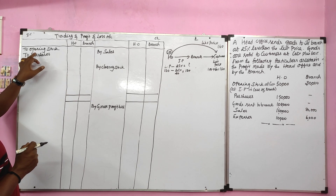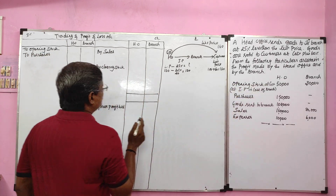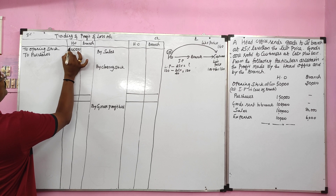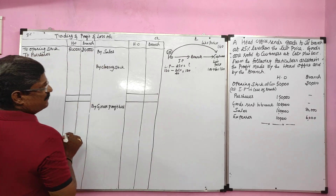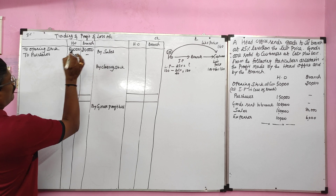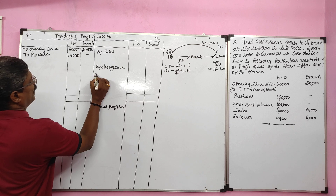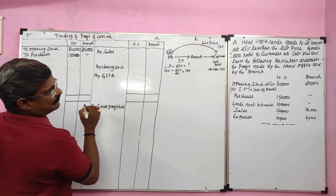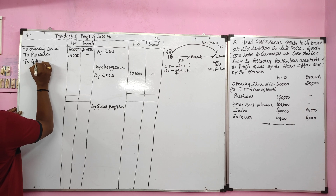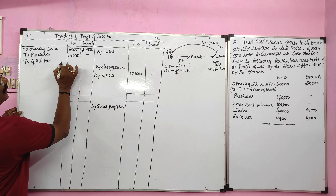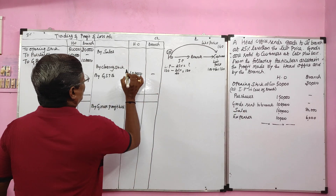The basic format is: debit side of trading account — opening stock, purchases; credit side — sales and closing stock. Opening stock of head office is 50,000; opening stock of branch is 30,000. Purchases of head office: 1,50,000; no purchase of branch. Goods sent to branch — 1,08,000 — recorded on the credit side of the head office trading account. Goods received from head office — 1,08,000 — recorded on the debit side of the branch trading account. Sales of head office: 1,60,000.